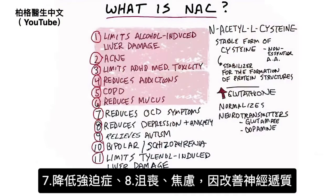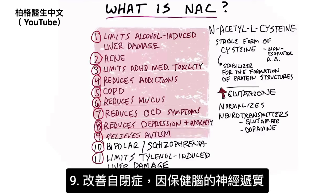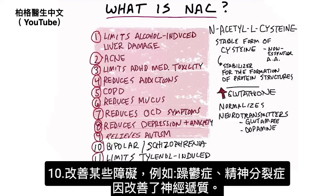Number seven, it can help reduce OCD — obsessive compulsive disorder — symptoms. Number eight, it can help reduce depression because it affects the neurotransmitters, as well as anxiety. Number nine, it can relieve autism symptoms. Why? Because it affects the neurotransmitters of the brain. Number ten, it can help certain disorders like bipolar and even schizophrenia, because it affects the neurotransmitters.